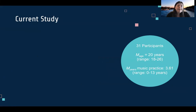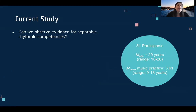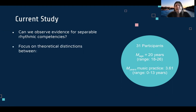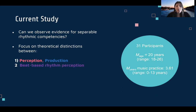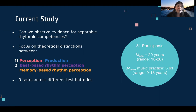In the current study, we wanted to look at this more closely and see if we could observe evidence of separable rhythmic competencies. We focused on just two distinctions: between perception and production, and between beat-based rhythm perception and memory-based rhythm perception. We ran nine tasks across different test batteries on 31 participants.